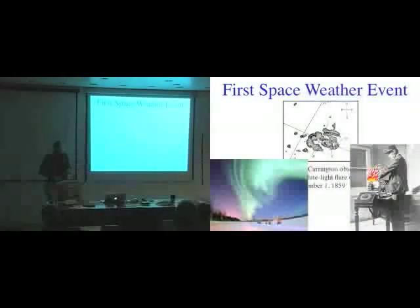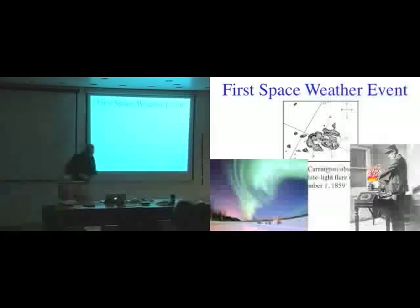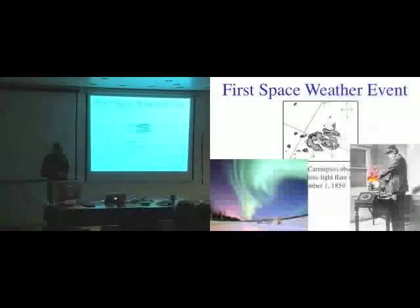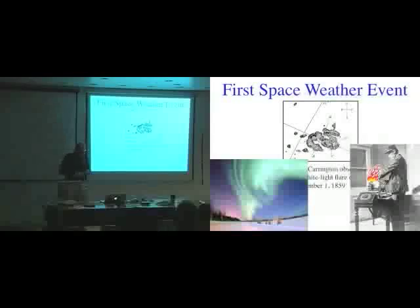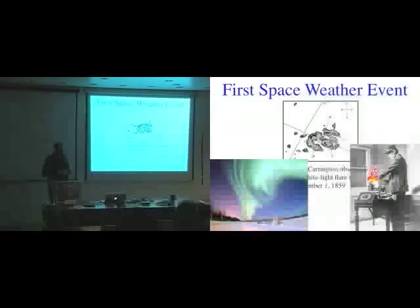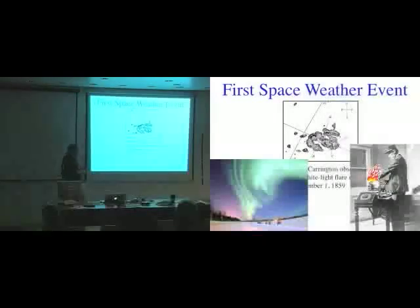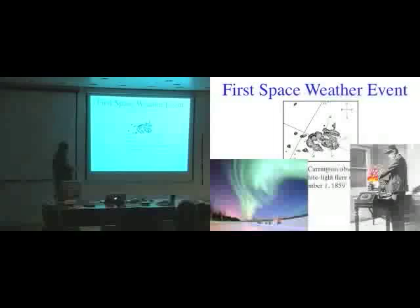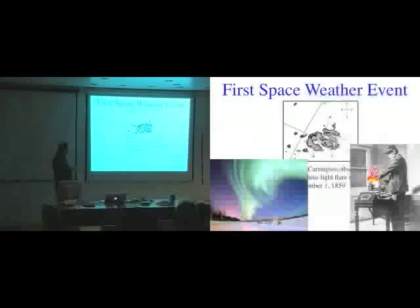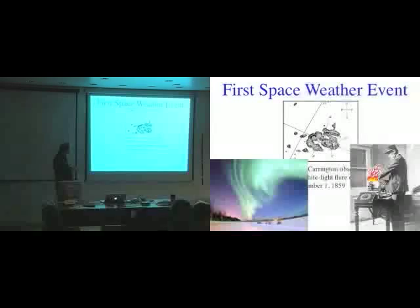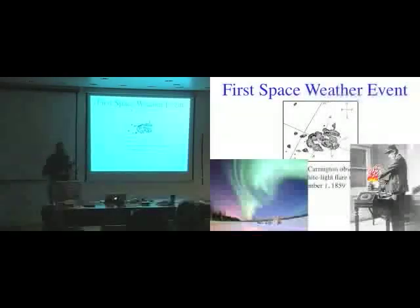One of the first space weather events well documented and discussed even today happened in 1859. Richard Carrington was just sitting there looking through a solar telescope, looking at the sunspots. And all at once he saw a big white light flare. So this is his hand drawing of what this active region looked like. I don't know if you can see these little white things here. That's where the flare started. And it rippled all along this sunspot. Today we call these two ribbon flares. It's probably one of the largest that we know of in the past 150 years.